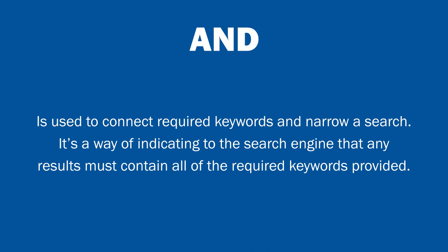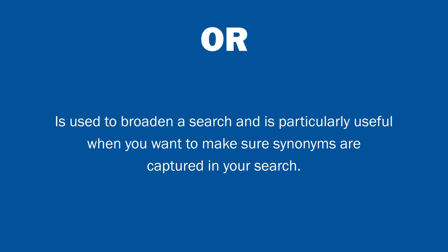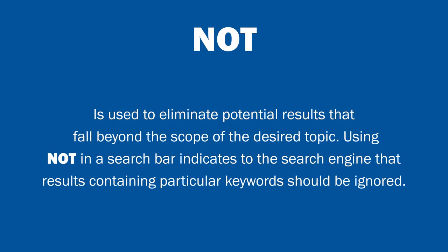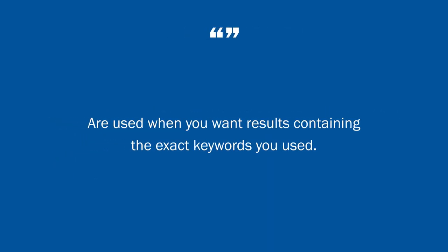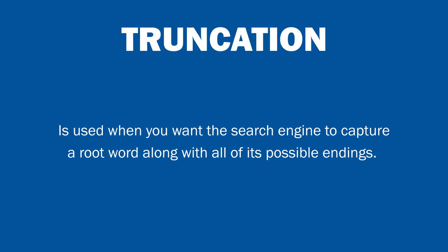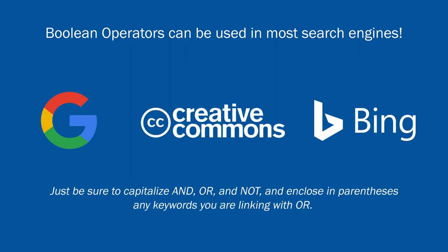Let's review. AND connects required keywords to narrow a search, ensuring all results contain every required keyword. OR broadens a search and is particularly useful for capturing synonyms. NOT eliminates results that fall beyond the scope of the desired topic, telling the search engine to ignore results containing particular keywords. Quotation marks are used when you want results containing exact keywords or phrases. Truncation captures a root word along with all its possible endings. Remember to capitalize AND, OR, and NOT, and enclose OR-linked keywords in parentheses.